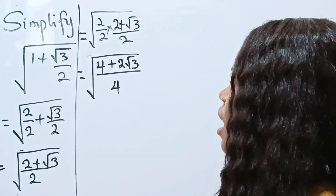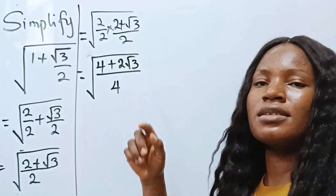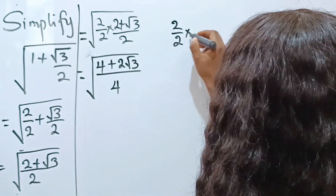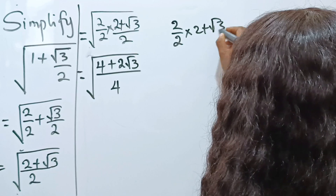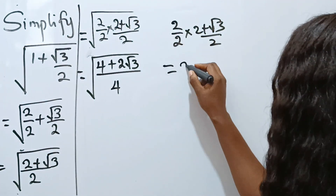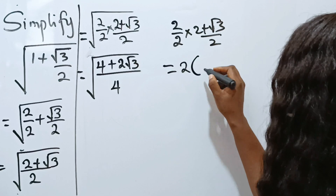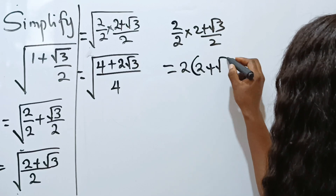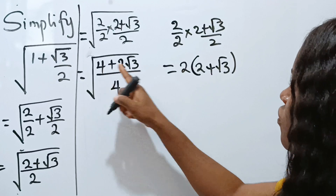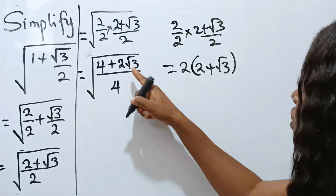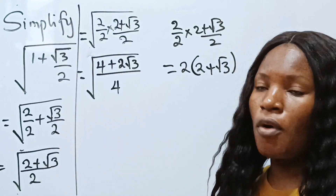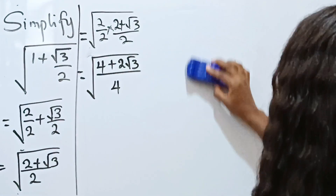Let me clarify this for those who might be confused. We have 2 over 2 multiplied by (2 plus root 3) over 2. We multiply the numerators: 2 times 2 gives 4, and 2 times root 3 gives 2 root 3. The denominators multiply to give 4.